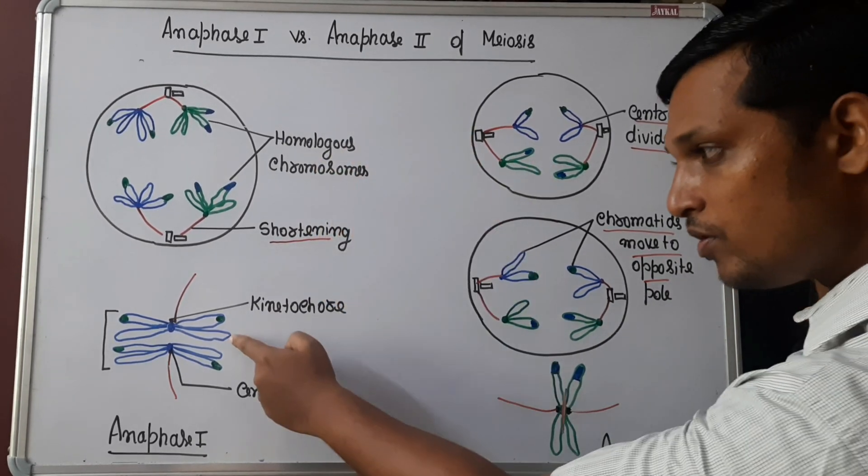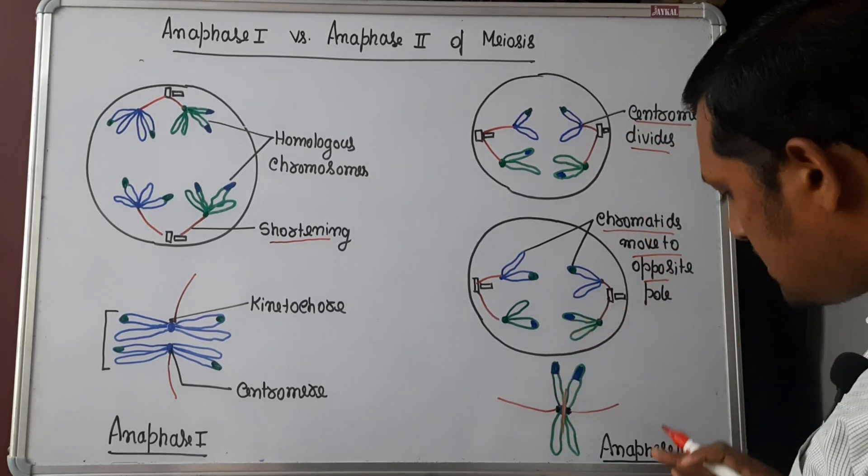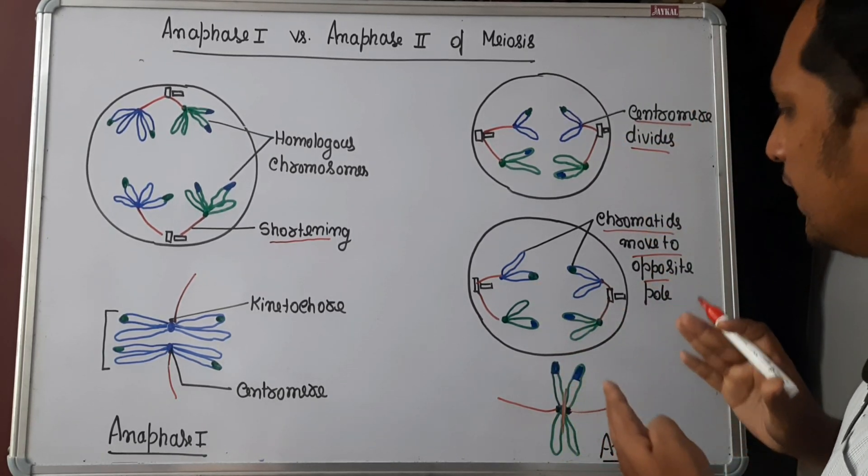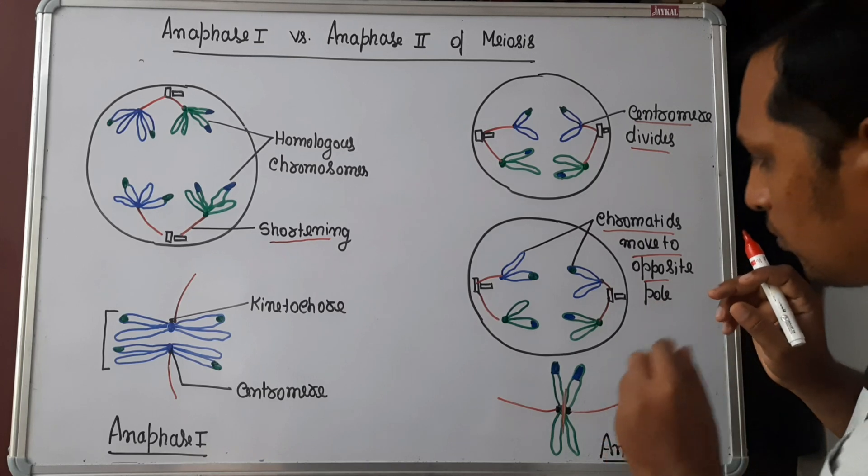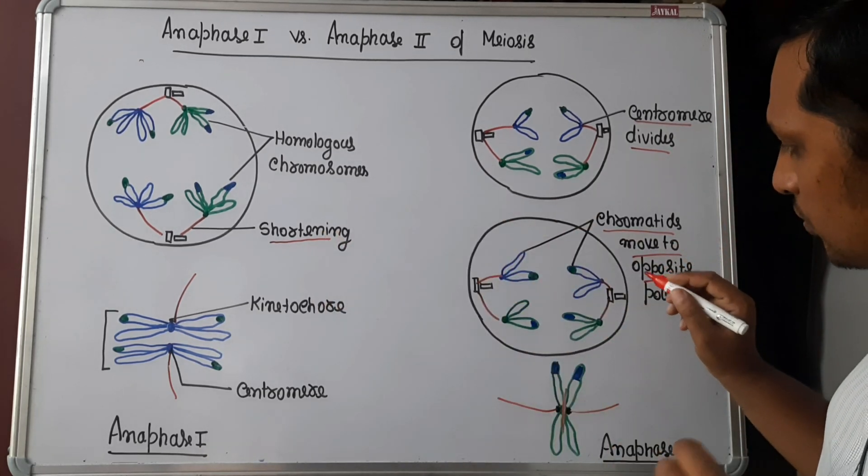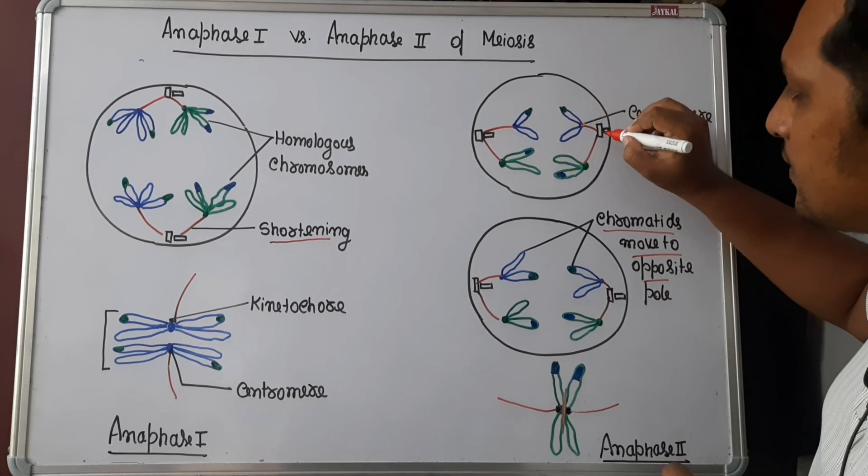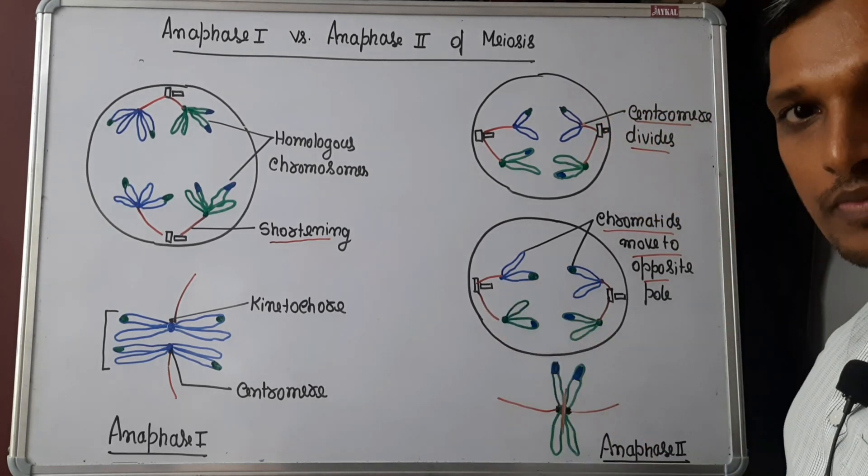Hence you can consider anaphase 2 is similar to mitosis. And when the chromatids are moving or when the homologous chromosomes are moving, remember the centromere is always facing towards the pole.